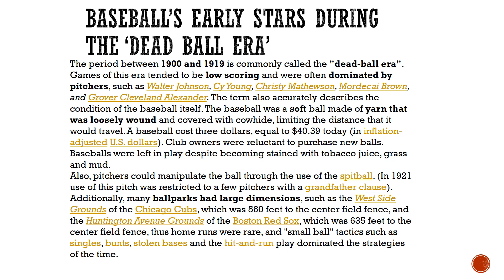Pitchers could also manipulate the ball through the use of the spitball. In 1921, use of this pitch was restricted to just a few pitchers who had used it prior, and it was outlawed for all new pitchers. Also during the dead ball era, many ballparks were huge — such as the West Side Grounds of the Chicago Cubs at 560 feet to center field, and the Huntington Avenue Grounds of the Boston Red Sox at 635 feet to center field. So home runs were rare. Small ball dominated — singles, bunts, stolen bases, and hit-and-runs — because it was rare for a guy to hit a home run over a fence.